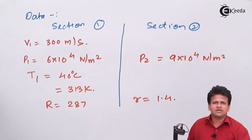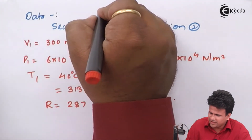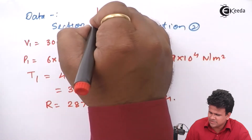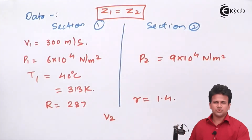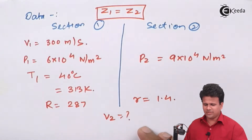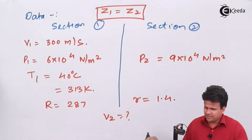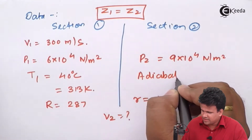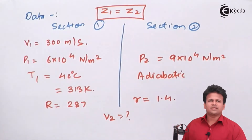The constants given are R = 287 and gamma = 1.4. We have to calculate V2. Since it is a horizontal pipe, Z1 equals Z2. We will apply Bernoulli's equation, and the process is specified as adiabatic.